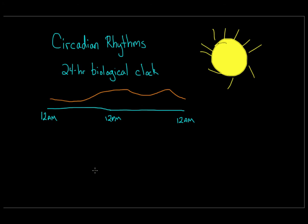Circadian rhythms also change as you age, which is why younger people tend to be night owls, while older people tend to wake up and go to bed early. Your circadian rhythms can also prevent you from sleeping in — maybe you get up at 6am every weekday, and then on Saturday you still wake up around 6am, because your internal biological clock has adjusted to that time. It regulates your metabolism, body temperature, and sleep cycles so that you wake up at the same time.